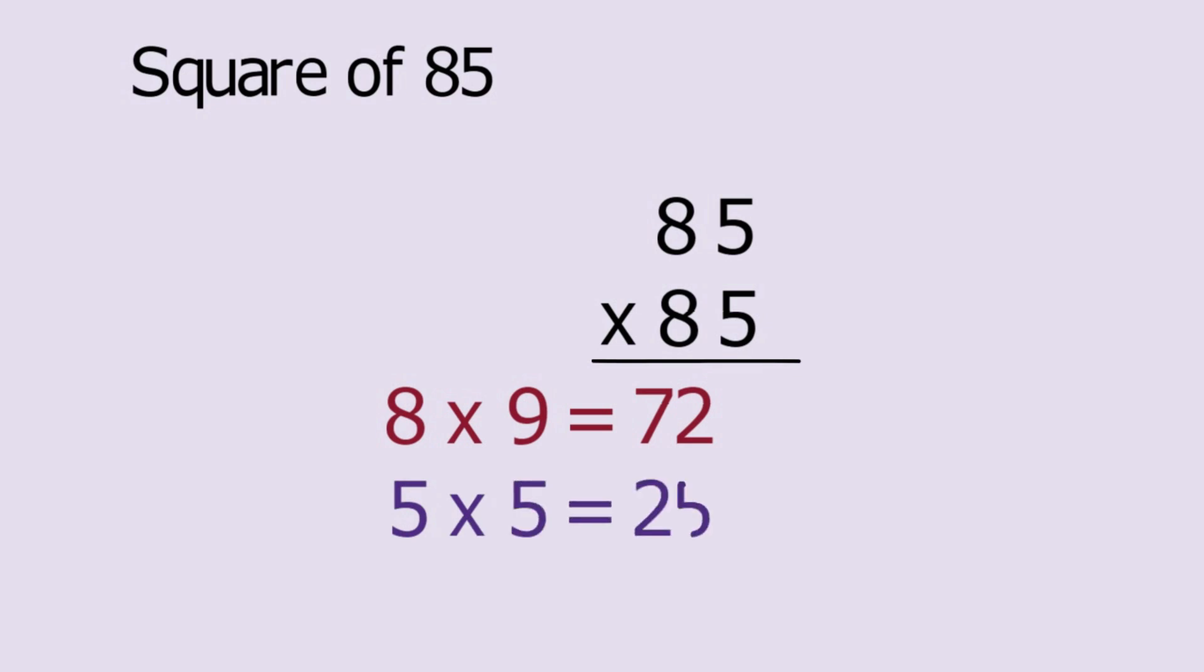How about the square of 85? Since 8 x 9 is 72, we immediately get 85 x 85 is equal to 7225.